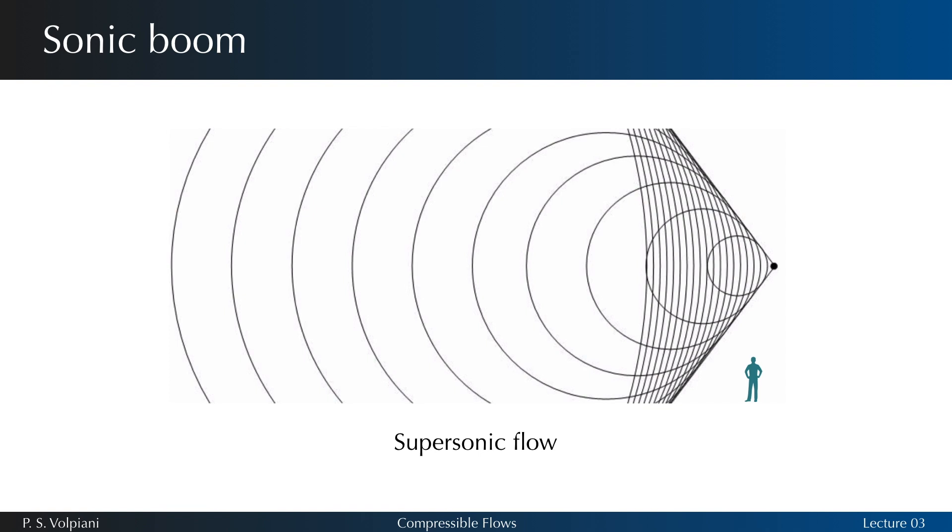For an observer at rest initially situated outside this cone, everything happens as if the source did not exist. Now imagine that the wave front that separates the disturbed and undisturbed regions reaches the observer. At that moment, the observer notices the pressure waves emitted by the source. The difference in sound level between the two situations makes him say that he heard a boom.